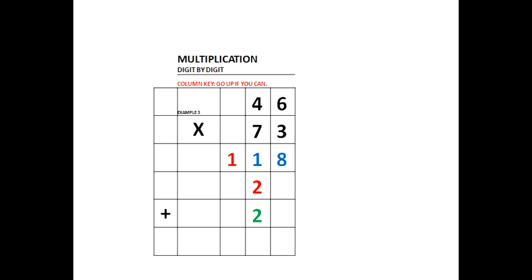Now we have to multiply 7 times 46. The first product, 7 times 6, is 42. The 2 will start in the 10's column. The 4 is in the next column to the left, and it goes up as high as it can go. For our next multiplication, 7 times 4 is 28. The 8 goes in the next column to the left relative to the first product for 7 times 46, which is 42. The 2 is in the next column relative to the 8, and it went up as high as it could go.